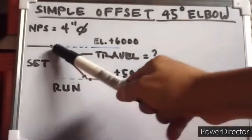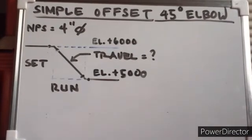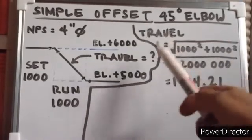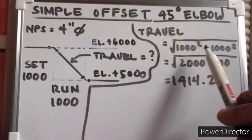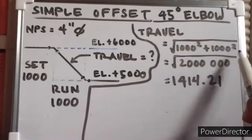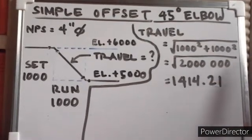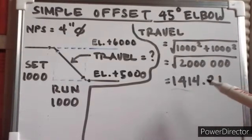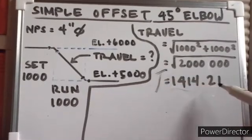This is the set and this is the run. Now, we are going to find the measurement of the travel. We are going to compute it by the Pythagorean theorem and convert the measurement using the formula: travel equals the square root of 1,000 squared plus 1,000 squared. The answer is the square root of 2,000,000, which equals 1,414.21. So the travel measurement is 1,414.21.